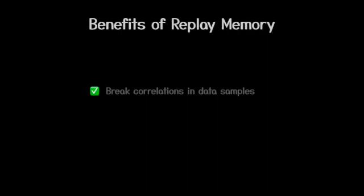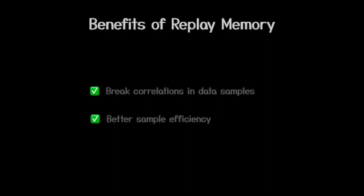Moreover, the replay memory helps make DQN data efficient. If we were to throw away each of the interactions after optimizing on them once, the agent would need a huge number of interactions to learn from. Conversely, the use of the replay memory ensures that the agent sees each data point multiple times before the data point is removed from memory. This is especially good for environments where data samples are costly to collect — for example, crashes in autonomous driving scenarios.